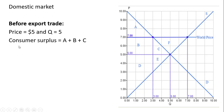Let's look at consumer surplus before trade. Consumer surplus is going to be the difference between the height of the demand curve and the market price of $5, up to the last unit bought and sold, which is 5. So we get this triangle encompassing areas A, B, and C. Consumer surplus is the difference between consumers' maximum willingness to pay and the market price.